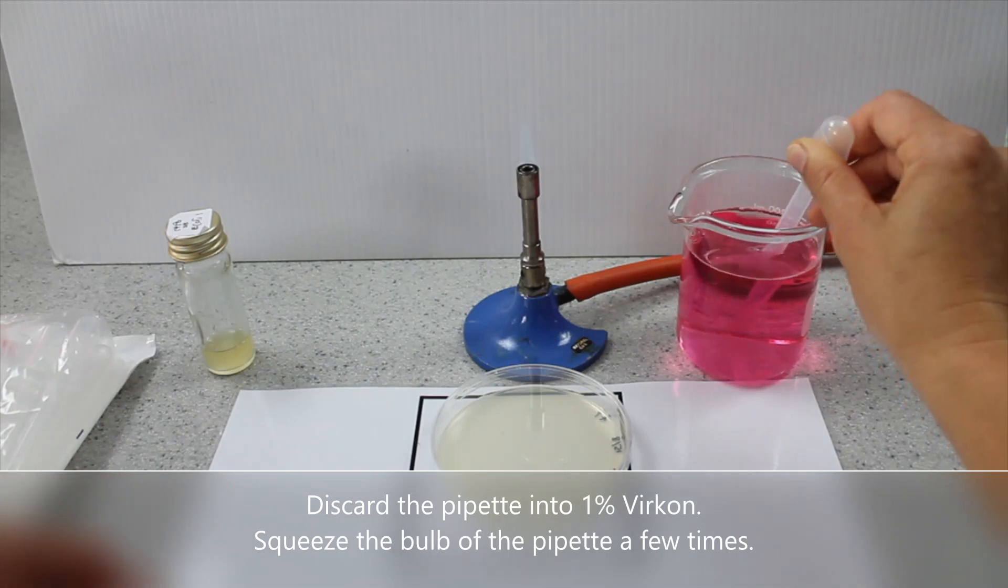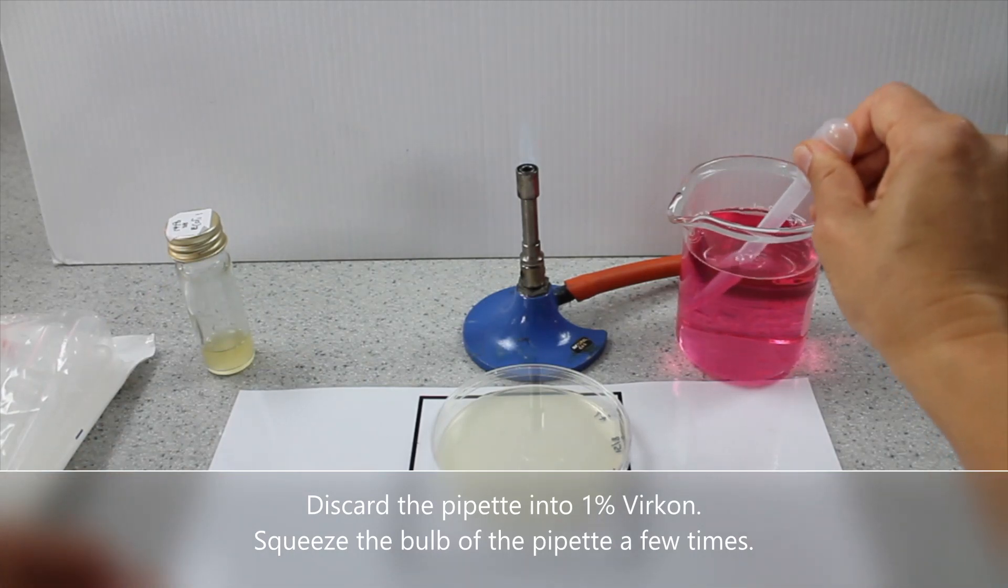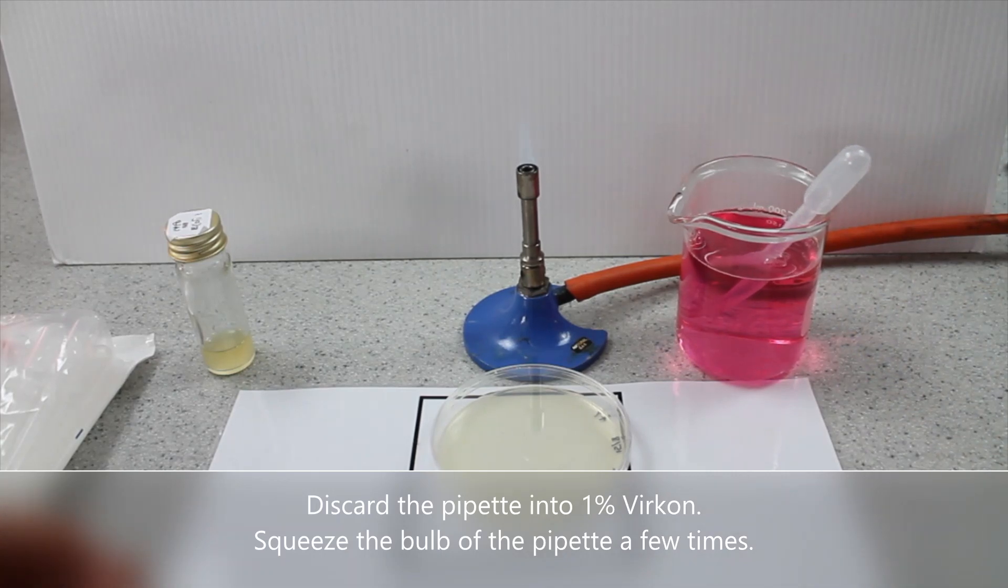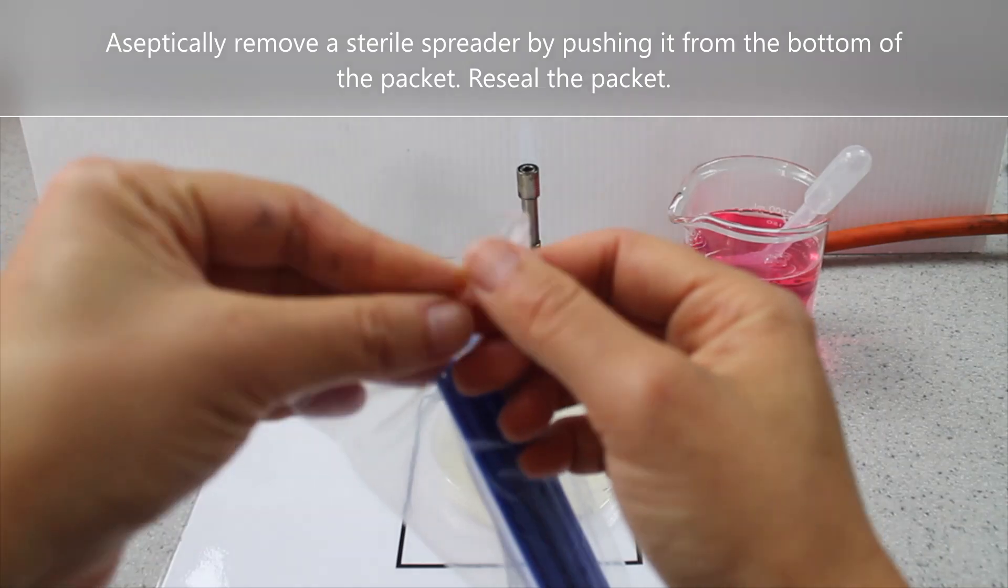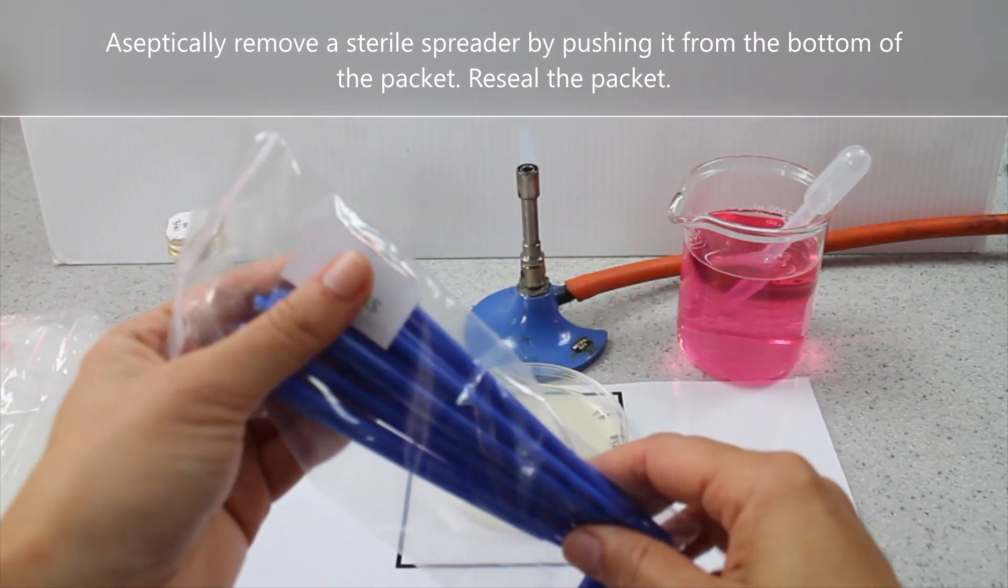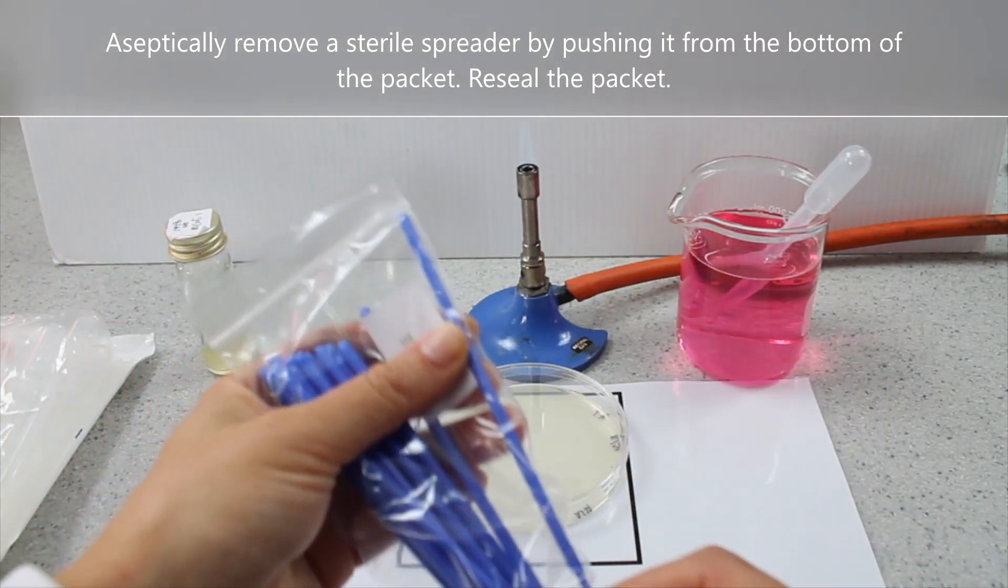Re-flame the lid. Discard the pipette into 1% vercon. Squeeze the bulb of the pipette a few times. Aseptically remove a sterile spreader by pushing it from the bottom of the packet. Re-seal the packet.